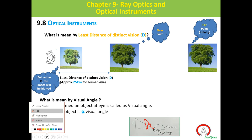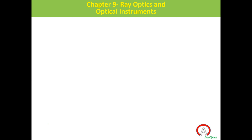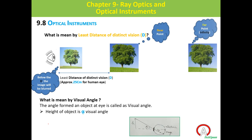So two important terms we have learned are: least distance of distinct vision, represented by capital D, and visual angle. We also covered near point and far point — far point we take as infinity in this study. For the human eye, the value of D is 25 centimeters.